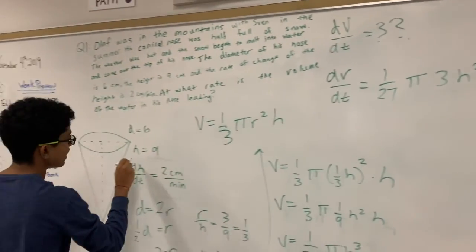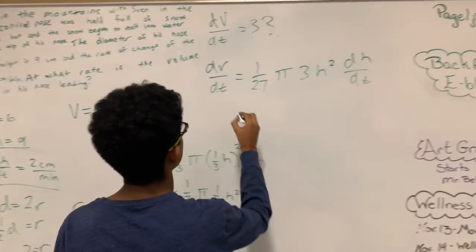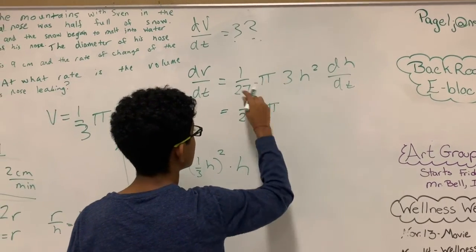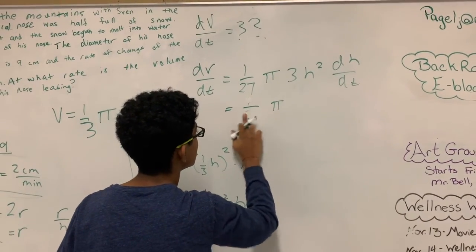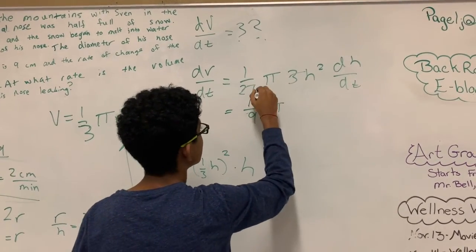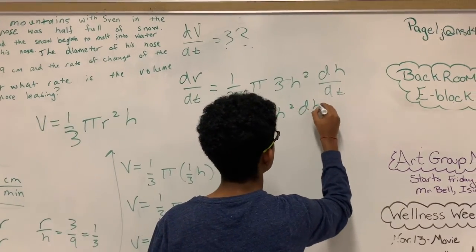So now we plug in the values, h is 9, dh dt is 2. So then we get 1 over 27 pi. We need to simplify this. So this would be 1 over 9 pi, and we get h squared dh dt.